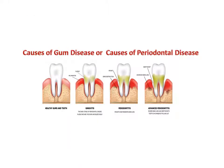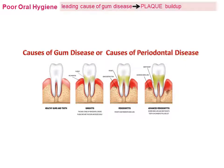What are the causes of periodontal disease? The leading cause of gum disease is poor oral hygiene, leading to plaque buildup which contains many different kinds of bacteria. Increased bacteria causes infection.